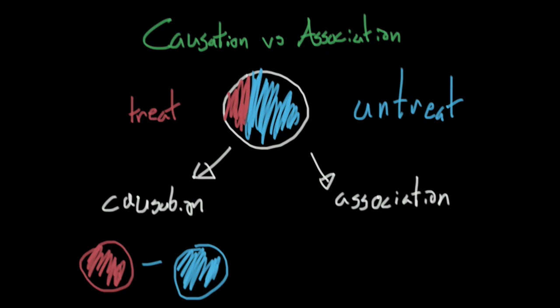Association is slightly different. What association does is it instead compares the part of the population that was treated versus the part of the population that was untreated.